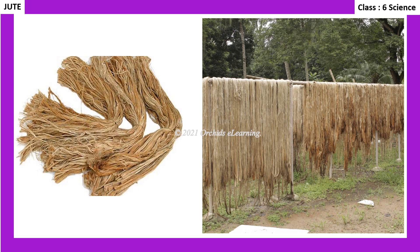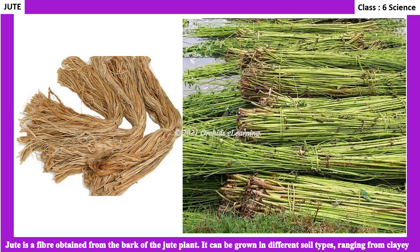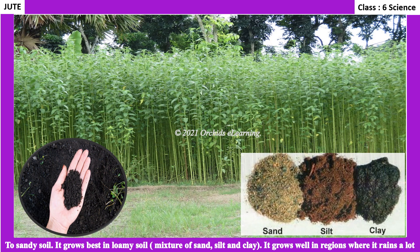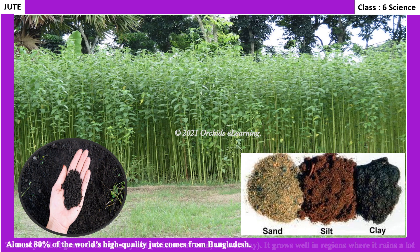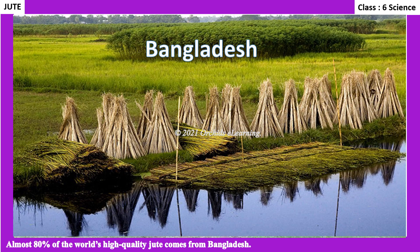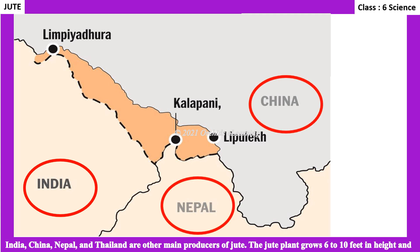Jute is a fiber obtained from the bark of the jute plant. It can be grown in different soil types ranging from clayey to sandy soil, but grows best in loamy soil — a mixture of sand, silt, and clay. It grows well in regions where it rains a lot. Almost 80% of the world's high-quality jute comes from Bangladesh. India, China, Nepal, and Thailand are other main producers of jute.